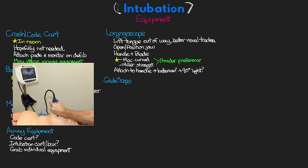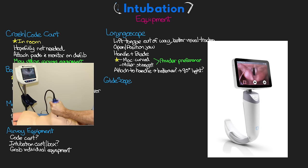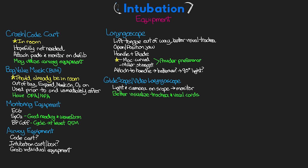Another important piece of equipment is the GlideScope, which is essentially a video laryngoscope. It has a light and camera on the laryngoscope itself attached via a cord to a small monitor. This allows the person intubating to better visualize the trachea and vocal cords. Some may reserve its use for difficult intubations, but its use in routine intubations is becoming more common. Make sure everything is working by turning it on prior to the situation in which you may need it.